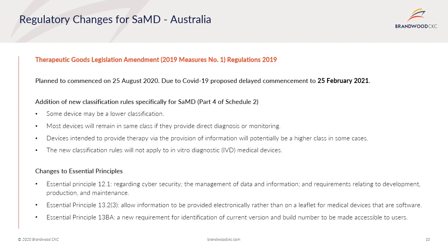The new classification rules will not apply to IVD medical devices. There will also be changes to the essential principles: Essential Principle 12.1 has been amended to clarify expectations around cybersecurity, the management of data and information, and requirements relating to development, production, and maintenance. Essential Principle 13.2 has been amended to allow information to be provided electronically rather than on a leaflet for medical devices that are software. A new requirement, Essential Principle 13b, has been introduced for identification of the current version and build number to be accessible and identifiable to users of medical devices that are or incorporate software.